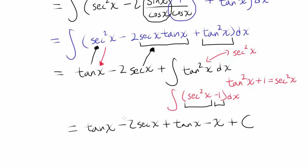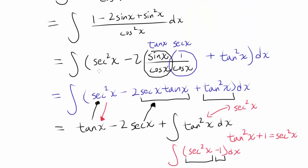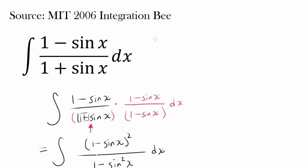Combining the two tangent of x terms, we get tangent of x minus 2 secant of x plus tangent of x minus x, which simplifies to 2 tangent of x minus 2 secant of x minus x plus C. So the integral of (1 minus sine of x) over (1 plus sine of x) is 2 tangent of x minus 2 secant of x minus x plus C.